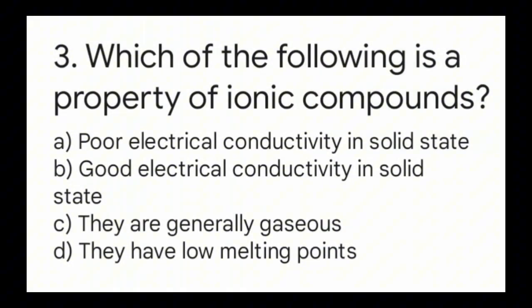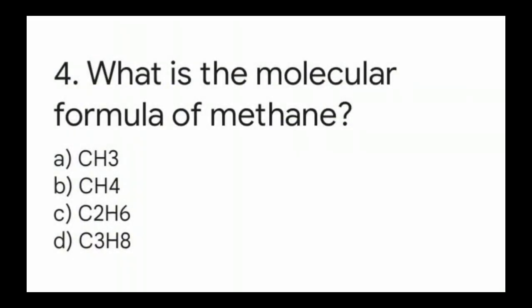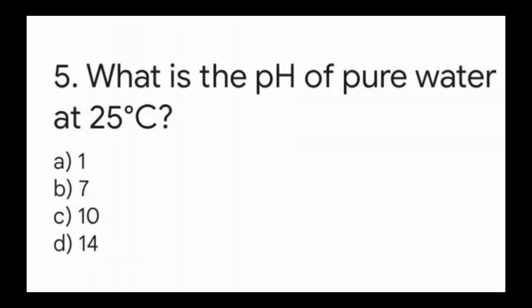Question number three: which of the following is a property of ionic compounds? The right answer is option A, poor electrical conductivity in solid state. Question number four: what is the molecular formula of methane, also called marsh gas? Question number five: what is the pH of pure water at 25 degrees Celsius? The right answer is option B, 7.